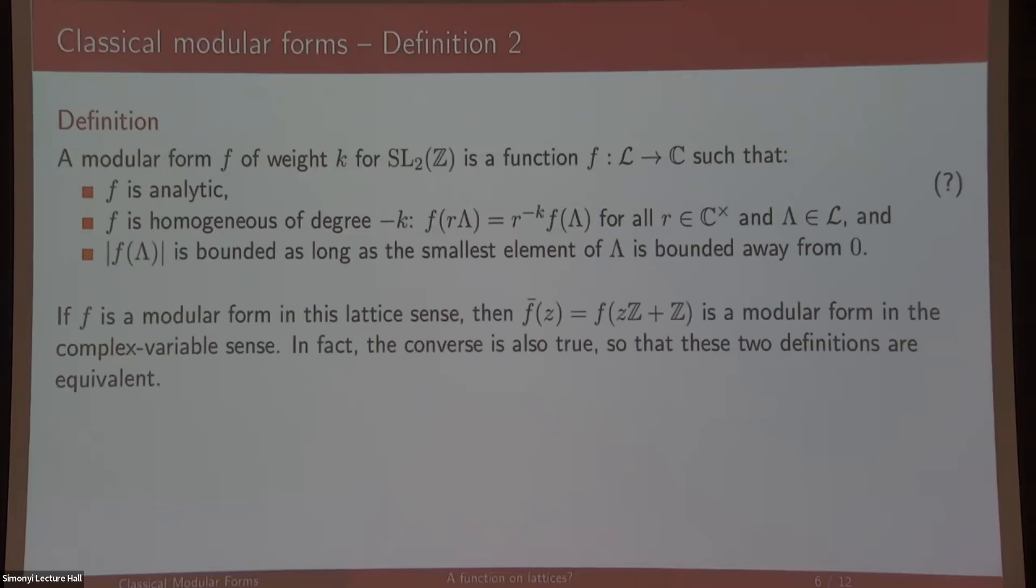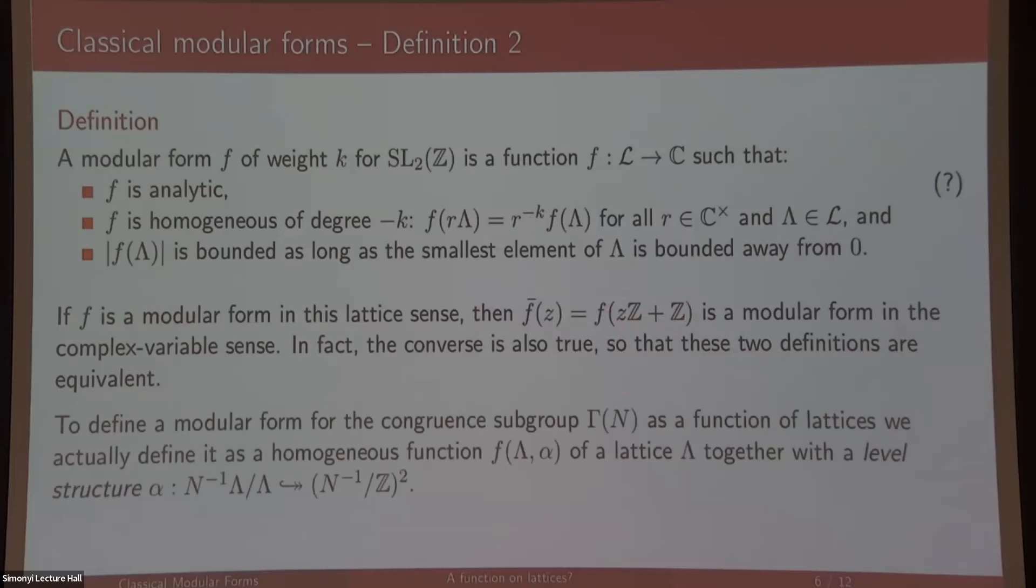These definitions are equivalent. If you have a complex number z in the upper half plane, you can make a lattice by defining your lattice to be z times integers plus integers. You can go vice versa. So these two definitions are equivalent. If you want to do a modular form for a congruence subgroup, you also need to adjoin a lattice with a level structure, which is a bijection between the n-torsion points of the lattice and integers.